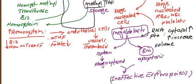Because megaloblastic cells are too large to leave the bone marrow, they are killed by macrophages or undergo apoptosis, leading to ineffective erythropoiesis. If all cell lines — red blood cells, white blood cells, and platelets — are affected and destroyed, you get pancytopenia. This occurs in severe forms of folate or vitamin B12 deficiency.